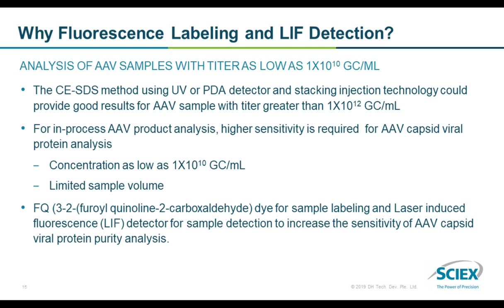As we just discussed, the CESDS method using a PDA detector can provide good results for analysis of AAV samples with titer greater than 1×10¹² gc/mL. However, for analysis of some in-process AAV products, higher sensitivity is required since the concentration of in-process AAV samples could be as low as 1×10¹⁰ gc/mL with very limited sample amount. Fluorescence dye and the LIF detector can be used to further improve the sensitivity of the CESDS method. The second workflow uses FQ dye as an example for sample labeling.